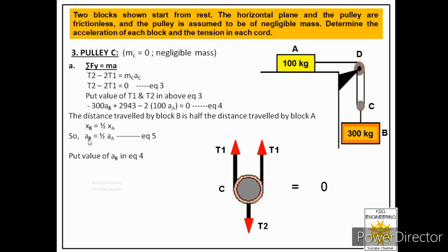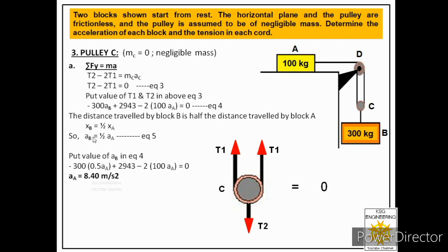Substituting aB = ½·aA into the combined equation replaces aB with ½·aA, leaving the equation in terms of aA only. Solving gives aA = 8.40 m/s². Since aB = ½·aA, we get aB = 4.20 m/s². These are the accelerations of block A and block B respectively.